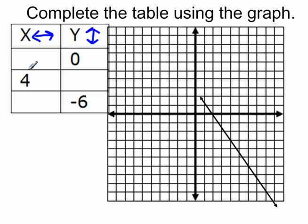In this first row we're given a y-coordinate of zero. Starting at the origin we want to move zero spaces up or down, so we look along this axis for where the function crosses. Right here is where the function crosses, so we want to know the horizontal movement because we're looking for the x-coordinate. We move two spaces to the right, and since it's to the right we know that it's positive, so a positive two.